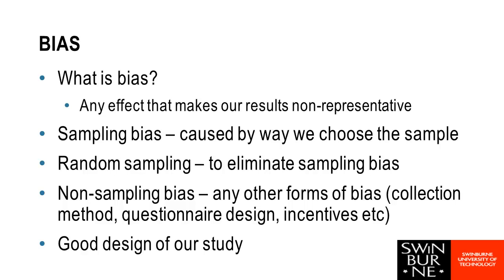One form of bias is what's called sampling bias, and this comes from the way that we choose our sample. One of the key ways around this is to use some sort of random sampling method. We're going to talk more about sampling bias and random sampling later in the unit.